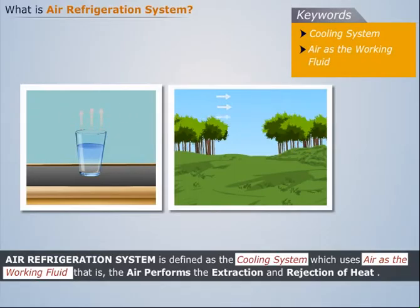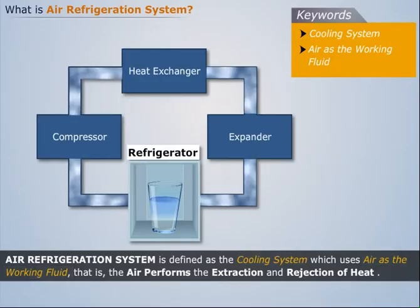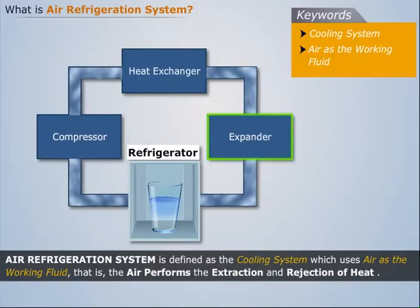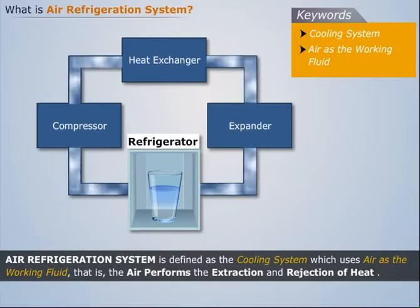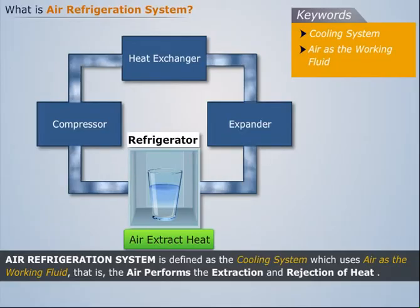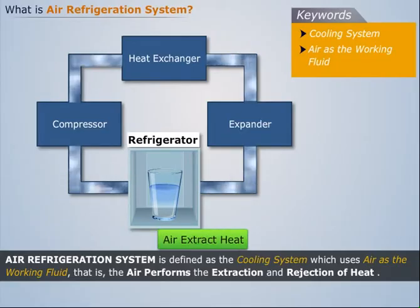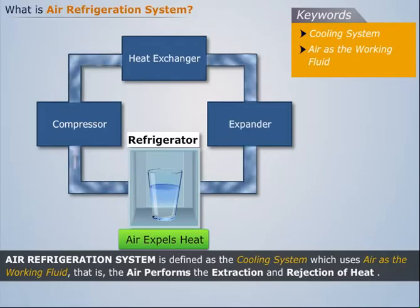A typical air refrigeration system mainly consists of compressor, heat exchanger, expander, and refrigerator. Here, the air extracts heat from the refrigerator, carries it through the compressor, and then expels it to the atmosphere in the heat exchanger.